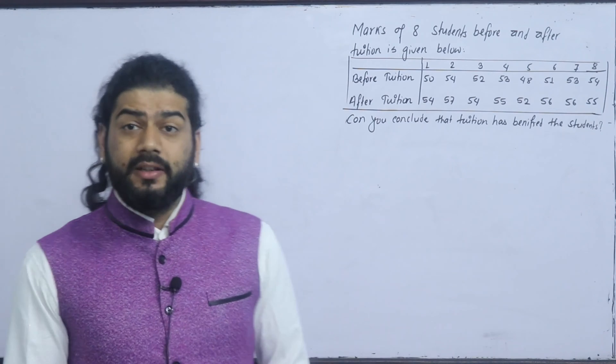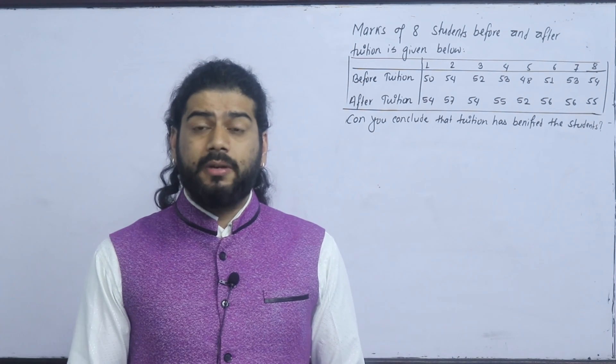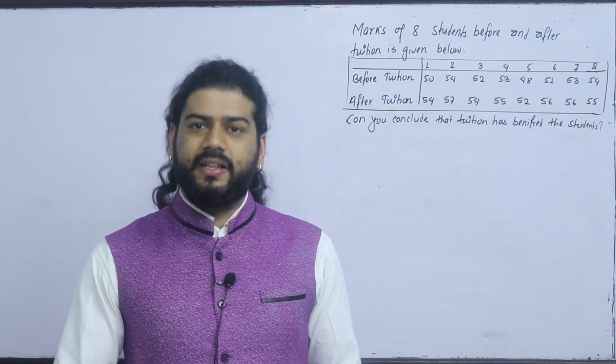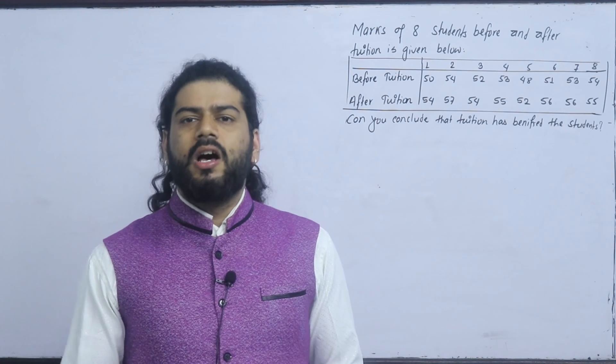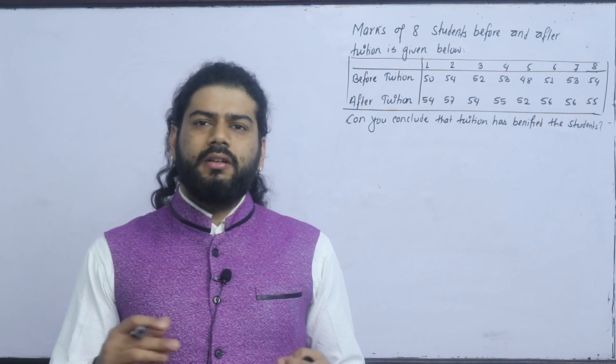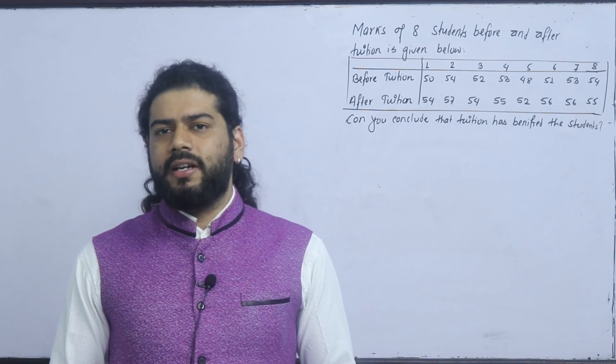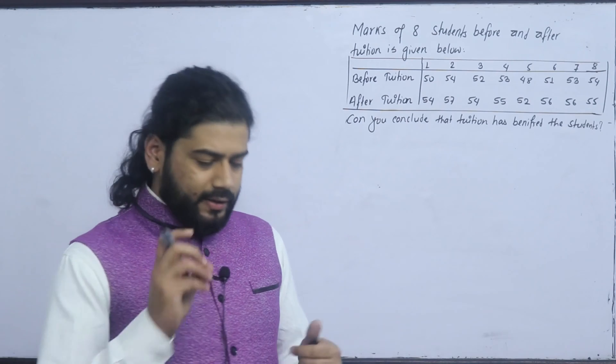The setup condition is normal. Then, null and alternate: less than or greater than — dependence. In this case, it is a one-tail type of condition that we are using.